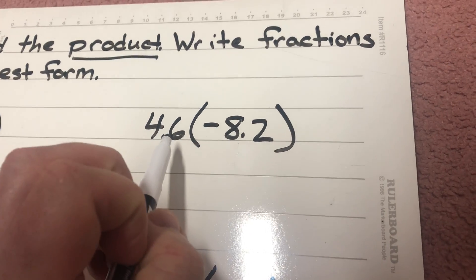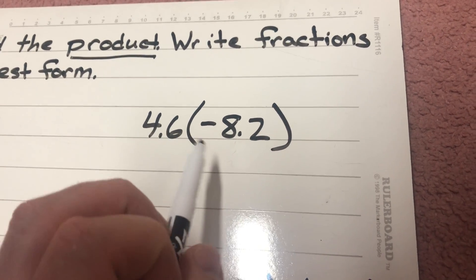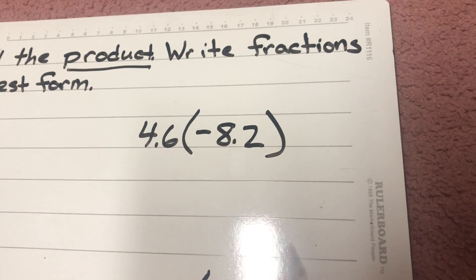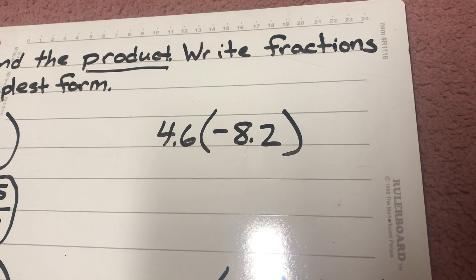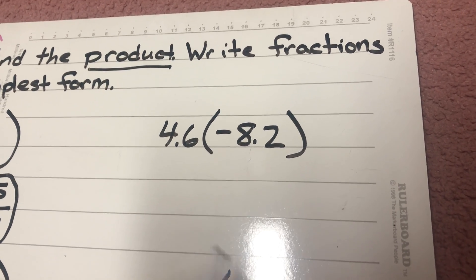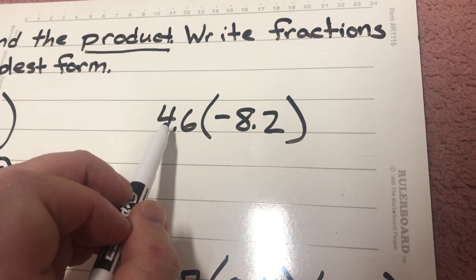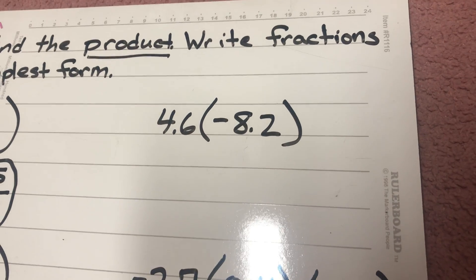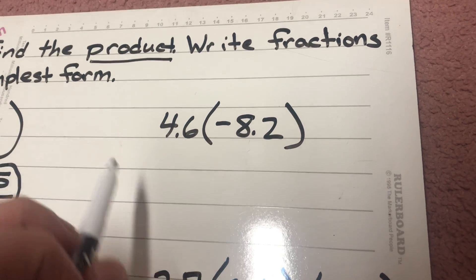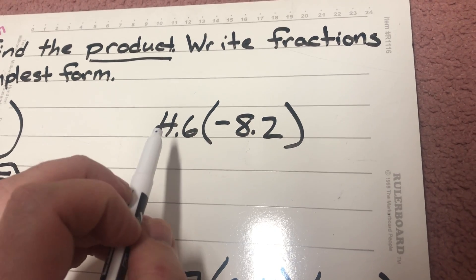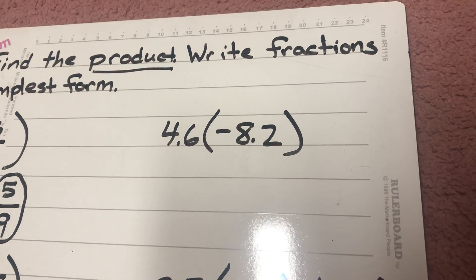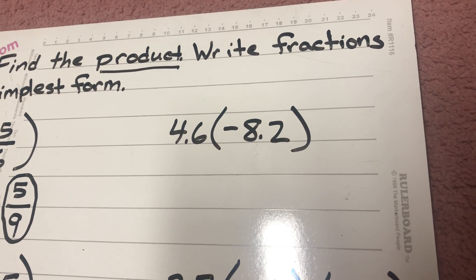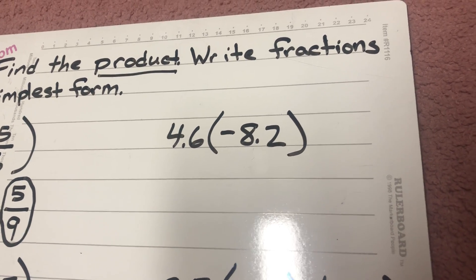Here's the next one: four and six tenths divided by a negative eight and two tenths. I need to acknowledge the fact that this number is positive and this number is negative, and anytime I have one positive number and one negative number, my answer needs to be negative.